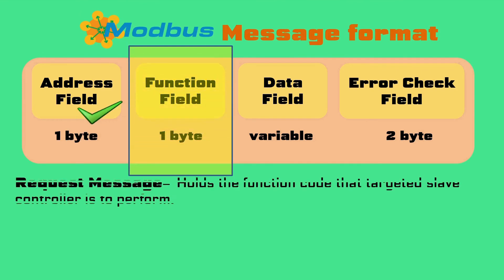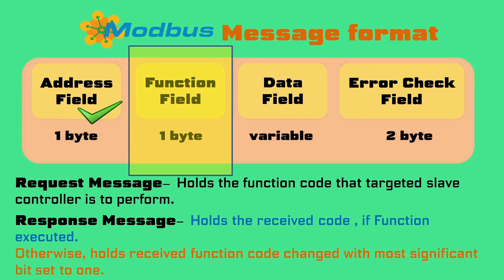The second field is the function field, which also offers a single byte of information. In request frames, this byte identifies the function that the targeted slave controller is to perform. In response frames, if the targeted slave controller was able to perform the requested function, the same function code will be sent back. Otherwise, the function field of the request will be echoed with its most significant bit set to 1, thus raising an exception in the response frame.